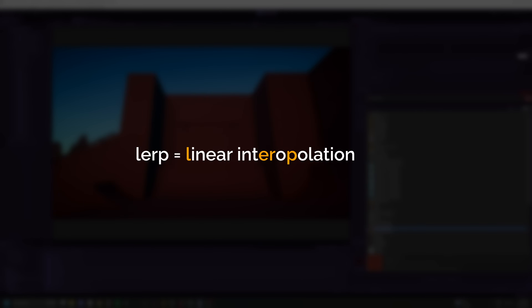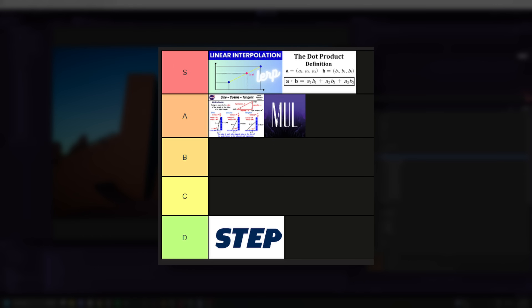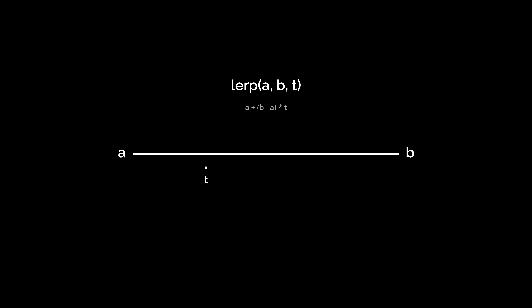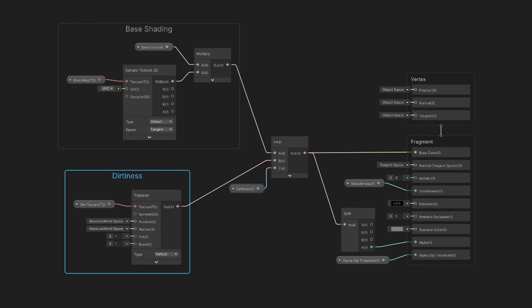Lerp, of course, is short for linear interpolation, and ranks number 1 just ahead of the dot product on my list of most useful shader functions. The basic idea is that you provide any values A and B, and a float T between 0 and 1. If you pass 0, you get A back; if you pass 1, you get B back; anything between will be a linear blend between A and B. It's also worth noting that you can totally do this in shader graph, which comes with a really handy triplanar node, but I prefer HLSL personally, so that's what I'll be doing.